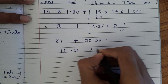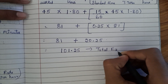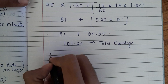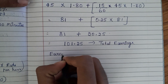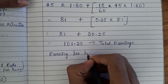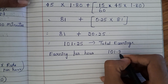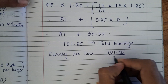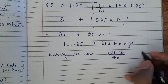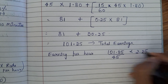This is the total earnings under Rowan plan, which is Rs 101.25. Now to calculate earnings per hour, divide 101.25 by 45 hours, and you will get Rs 2.25 per hour.